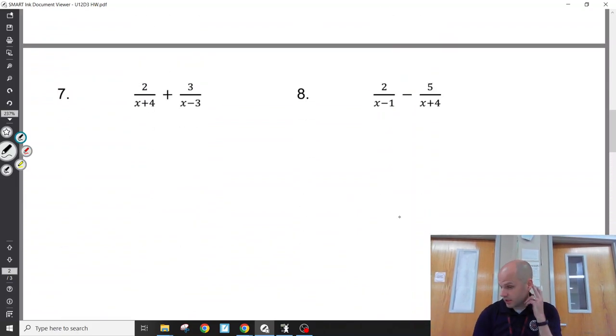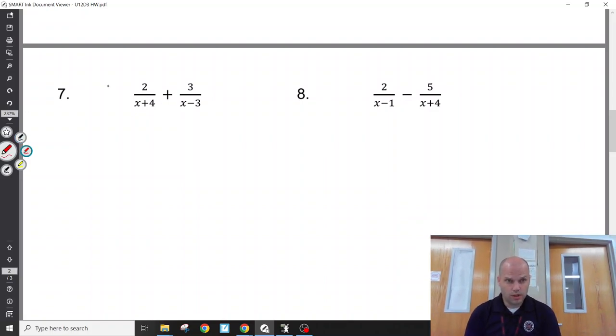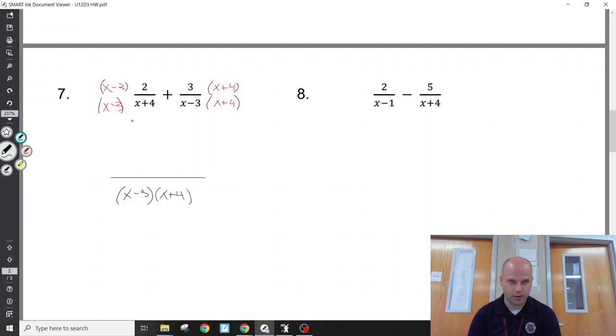Now we have x pluses or x minuses in the denominator. The easiest common denominator you can get is using the other's denominator. So multiplying this by x minus 3 over x minus 3, multiplying this by x plus 4 over x plus 4. But when we do that, we want to leave the denominator in the factored form. It helps us when we're solving or figuring out when the denominator equals 0.